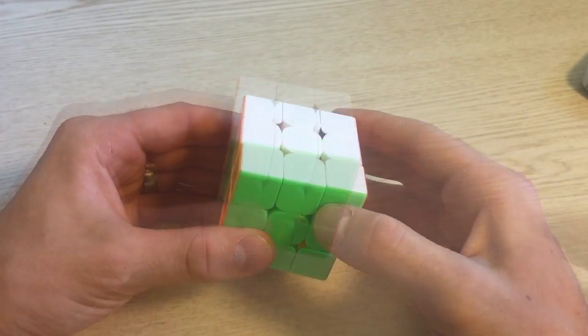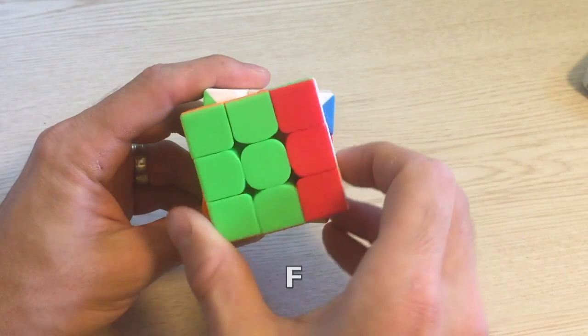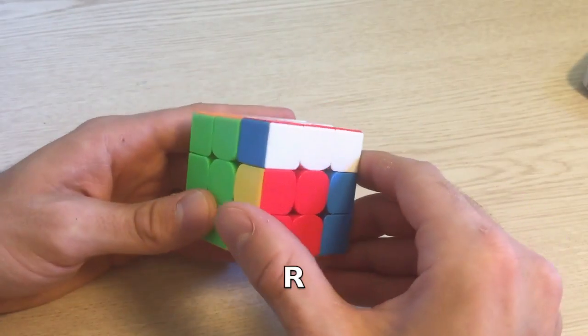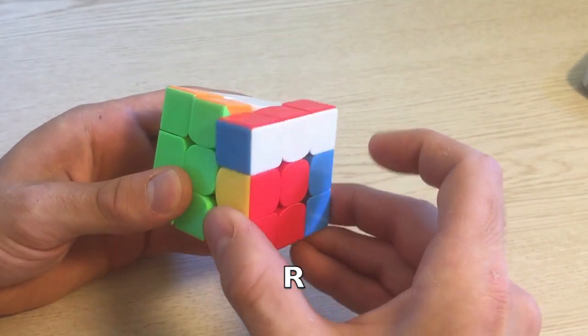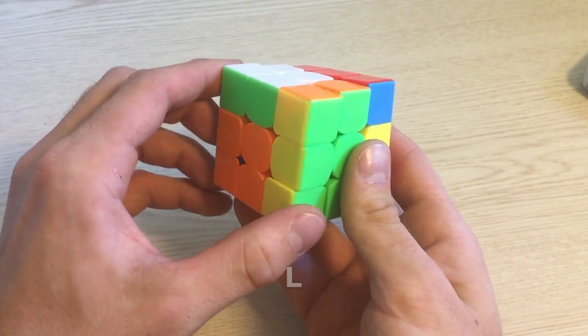So a U move would be this, F is this, R this because you can see what it's like if you're looking at it from that side, L is this.